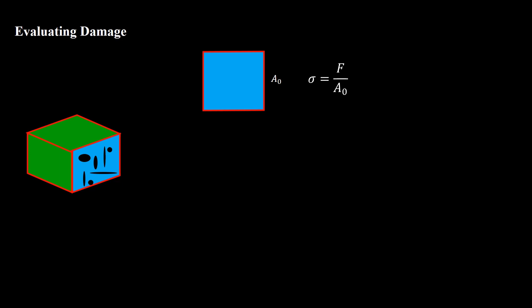This stress is known as effective or macro stress. But in reality, a part of the cross-section is occupied by voids, so the real area of the part is smaller than A₀. We can calculate the real area by subtracting the void area from the A₀. The most common parameter which is used to evaluate the damage in a part is d, which is the ratio of the void area to the total area of the part.